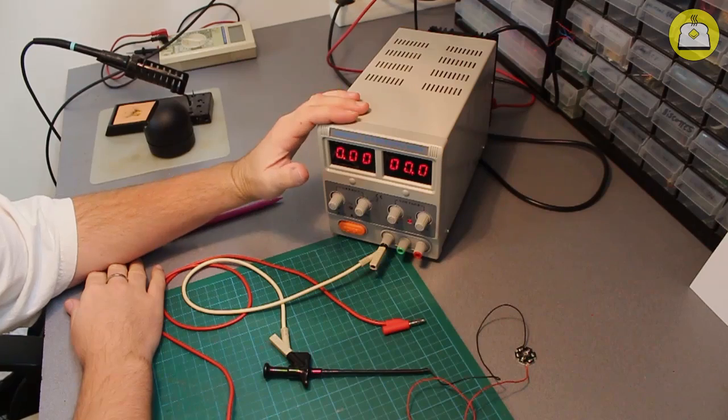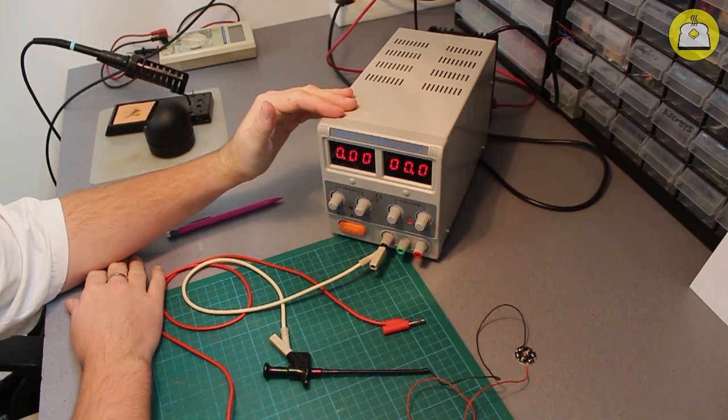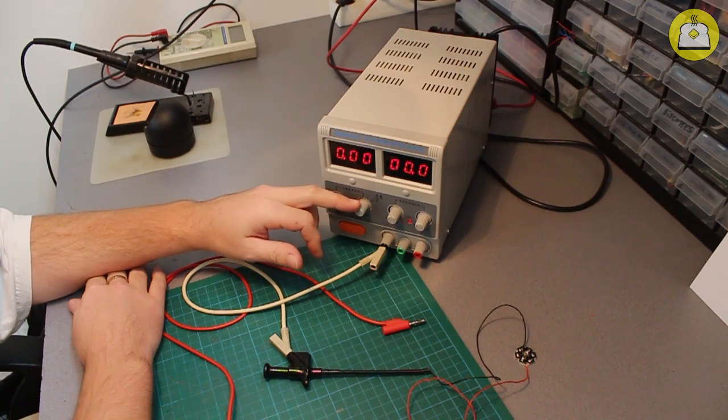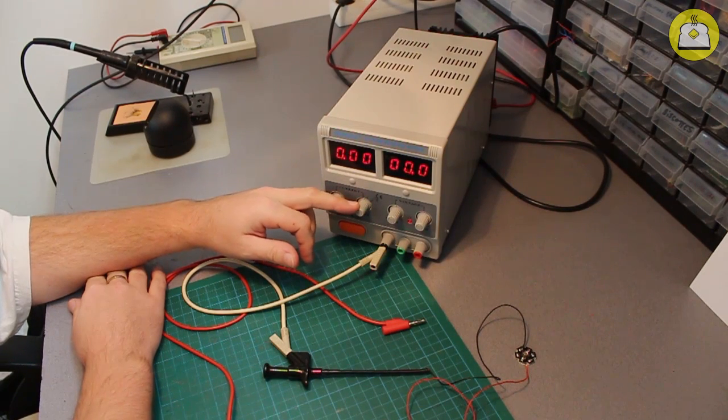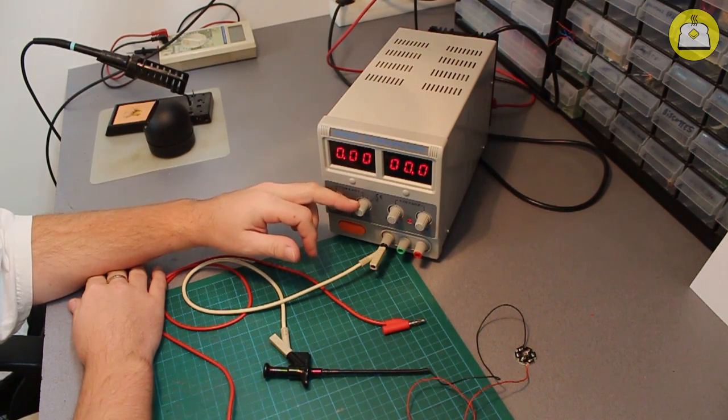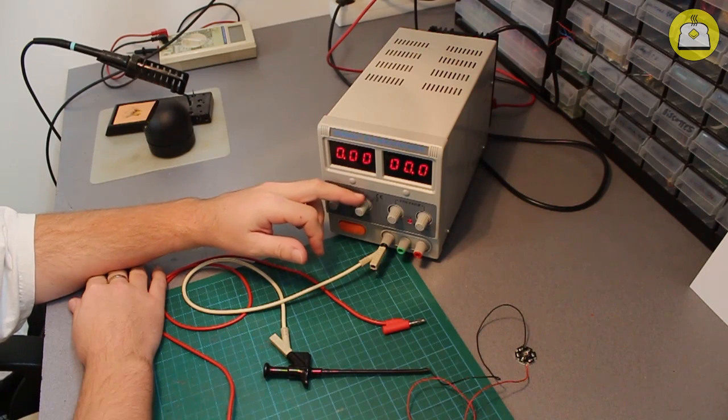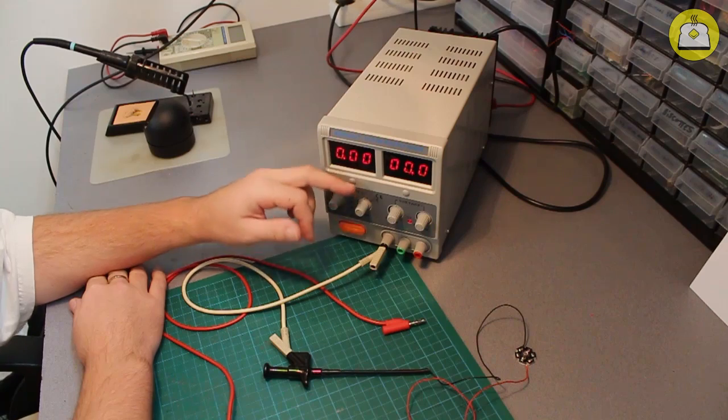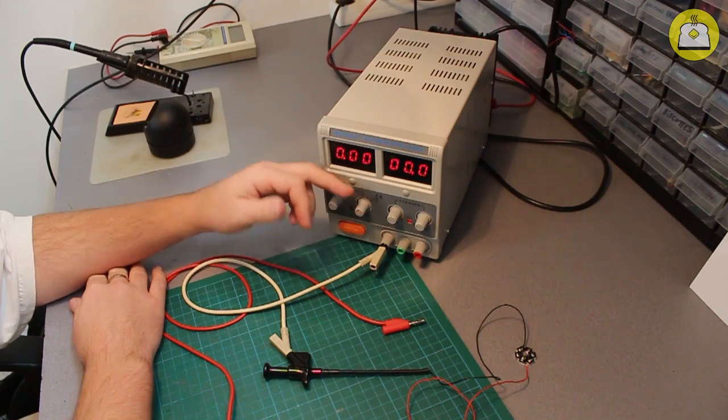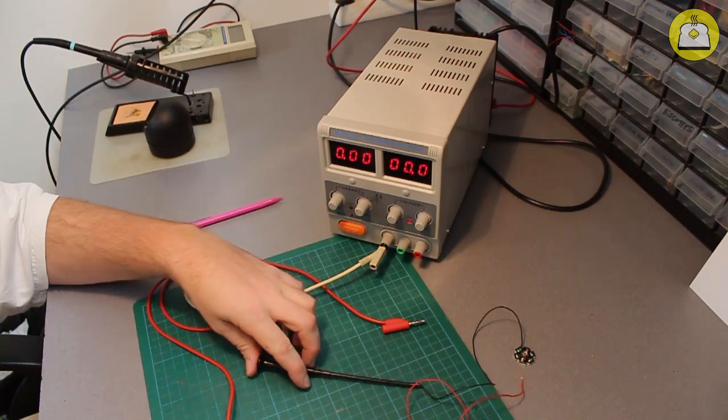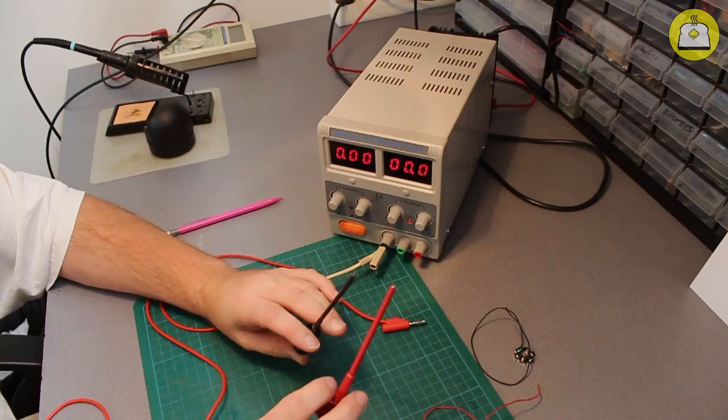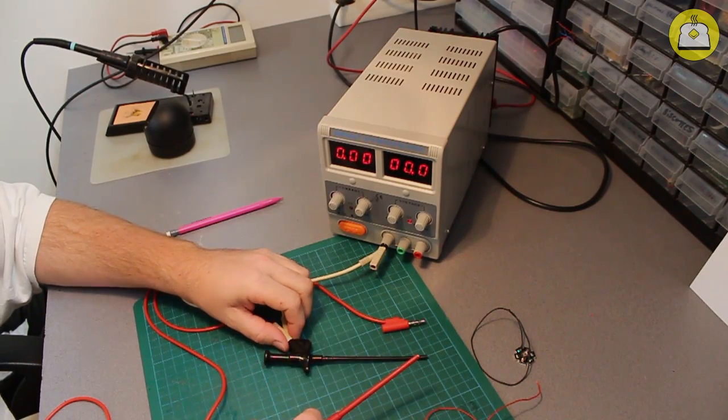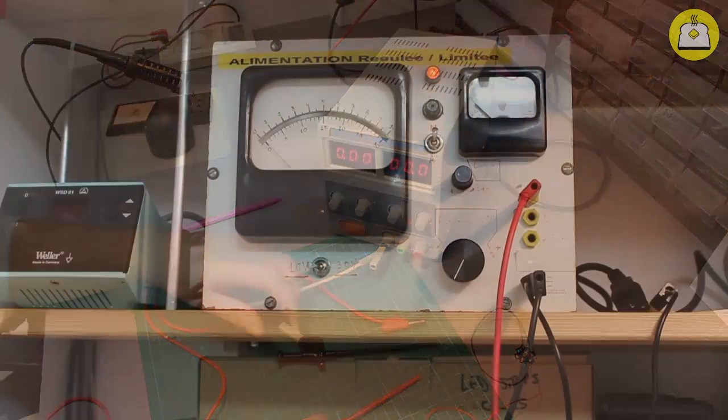Most of those modern I would say power supplies have only indicators here, I mean not indicators but knobs that have no indication of the current you're going to set here. So it's not very easy to just visually know that the limit is at one amp or two amps, so you definitely have to use the short circuit method to be sure what the maximum current is.